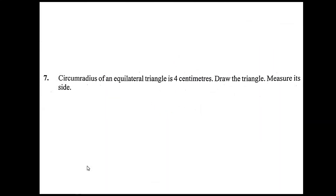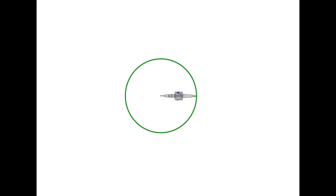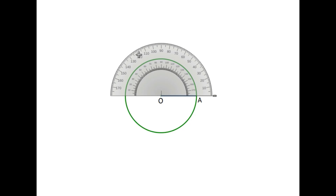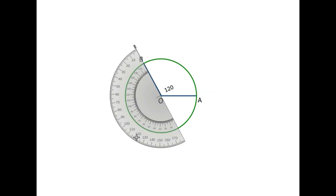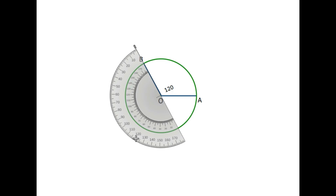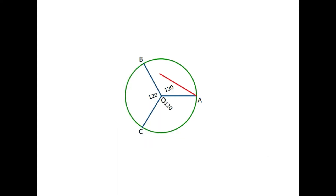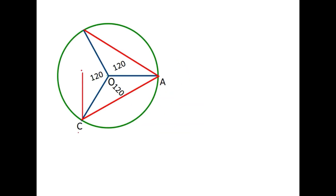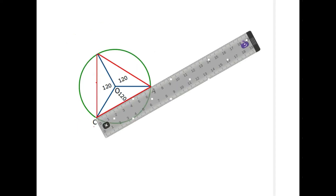Seventh problem: the circumradius of an equilateral triangle is 4 centimeters. Draw the triangle and measure its side. Draw a circle of radius 4 centimeters first. Now draw a radius OA. Taking 120 degrees at the center, draw another radius OB. Again, take 120 degrees at the center and draw another radius OC. Now join A to B, B to C, and C to A to get the required triangle ABC. Measuring the side, you can see it is almost 6.9 centimeters.